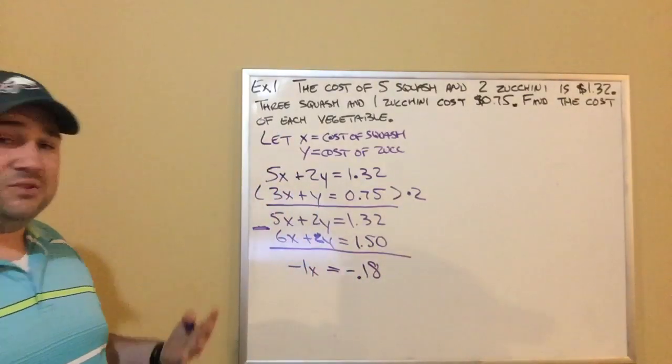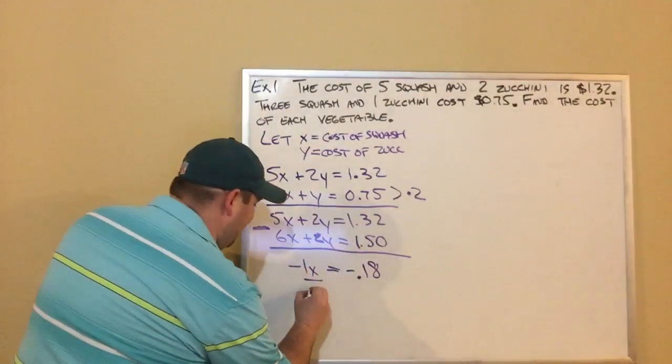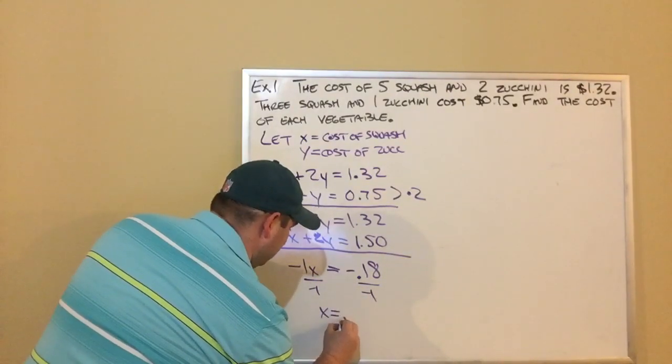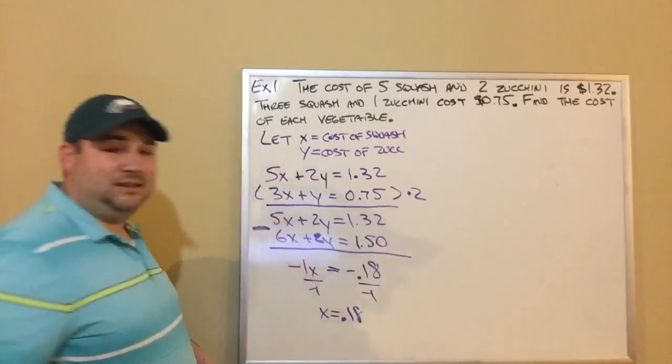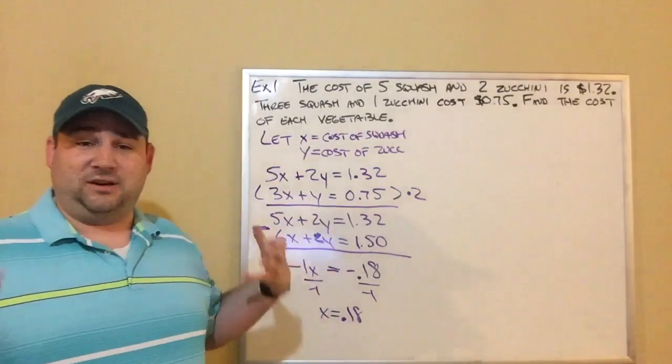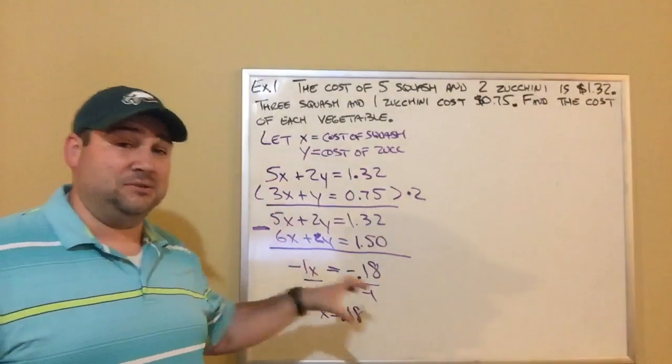So now I just solved this one-step equation. I'm just going to divide by negative 1. I do that. I get X equals 18 cents. I'm now halfway to my answer. And if you remember, once we figure out what one of the variables is, in this case, we figured out X equals 18 cents, all we got to do is we take it and plug it back into one of our two equations.